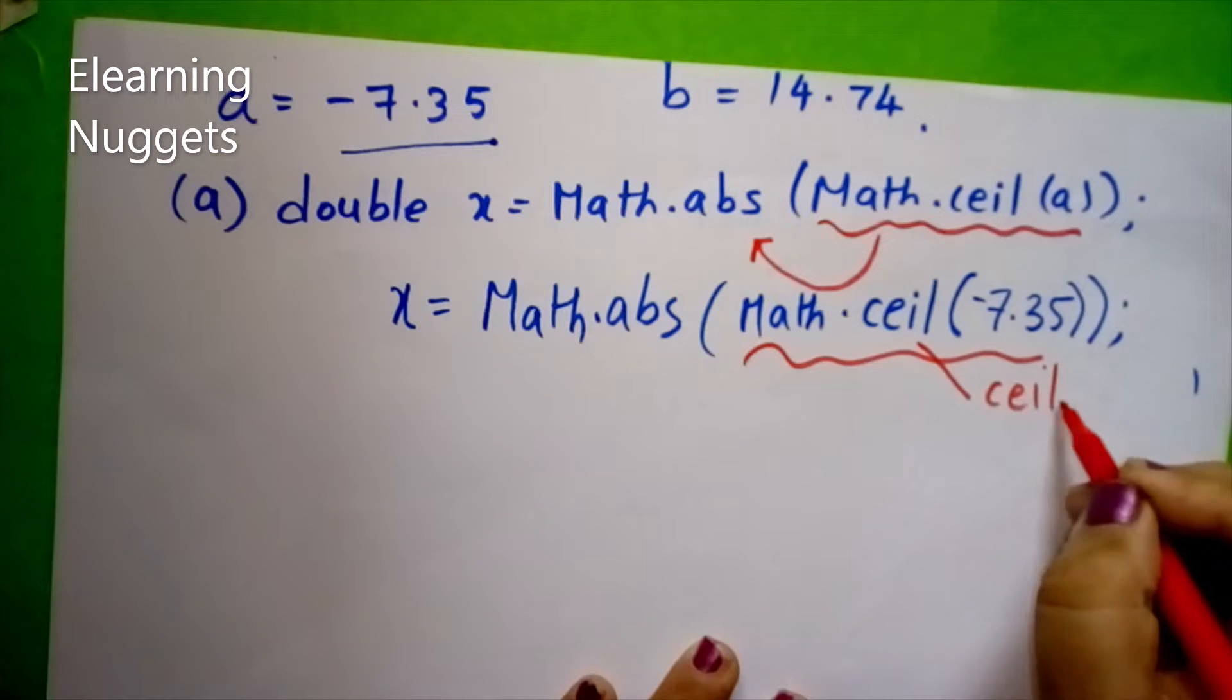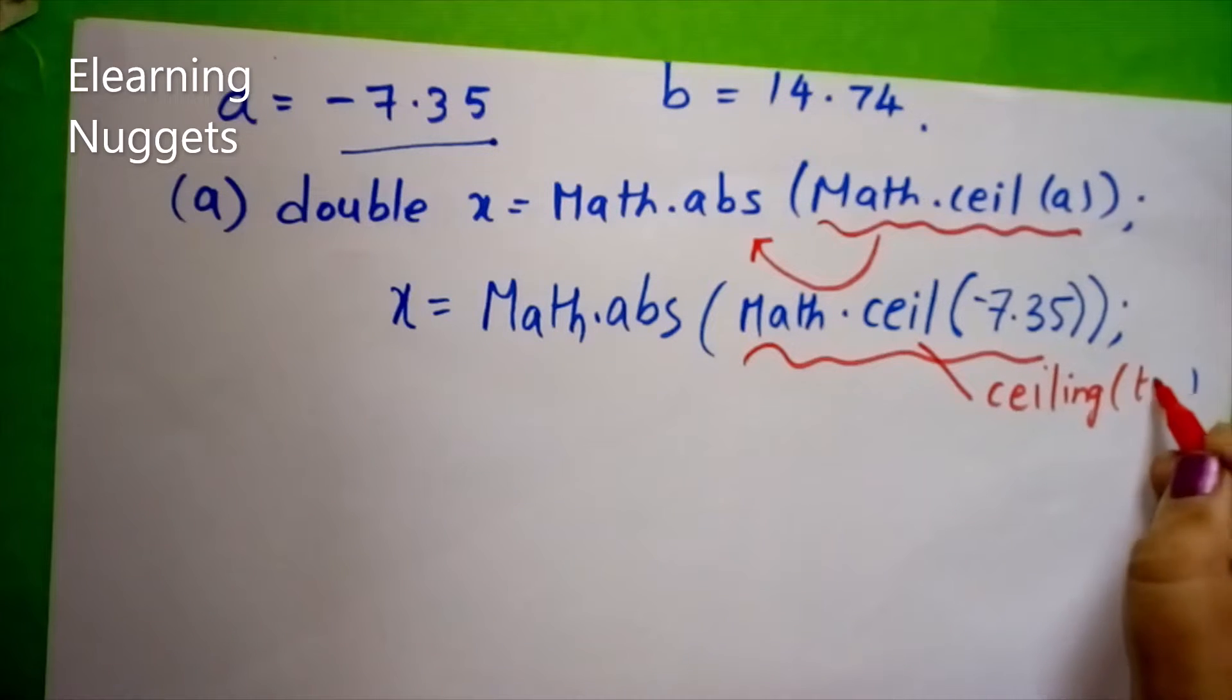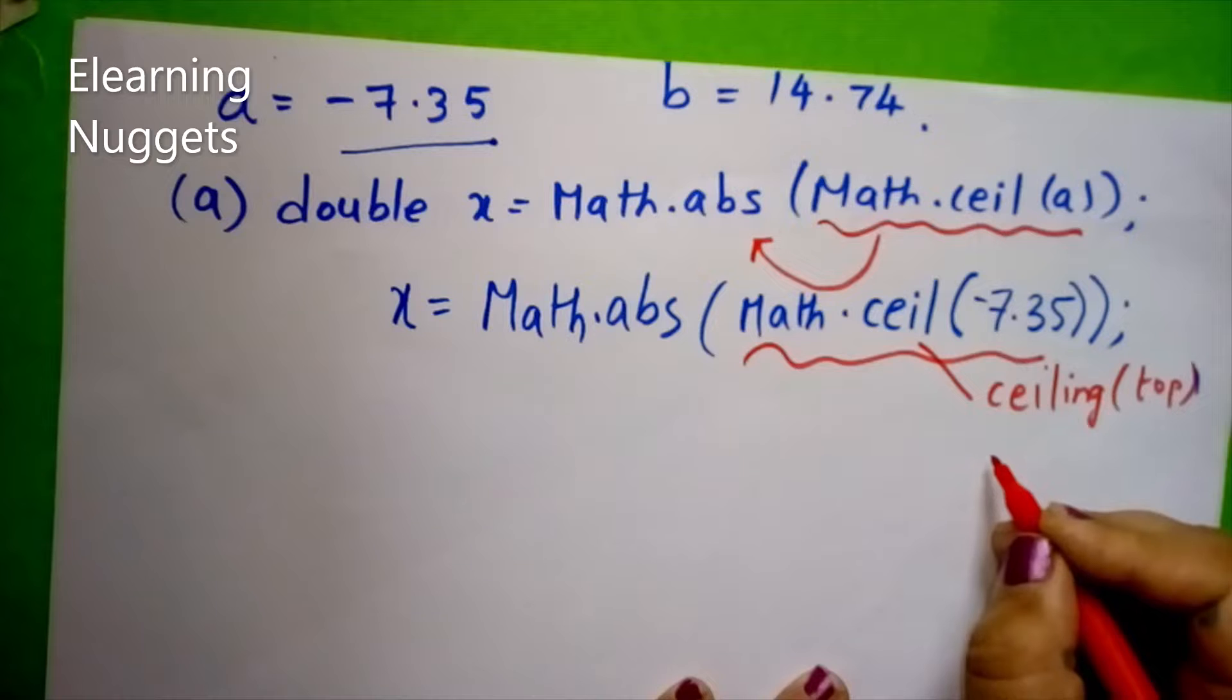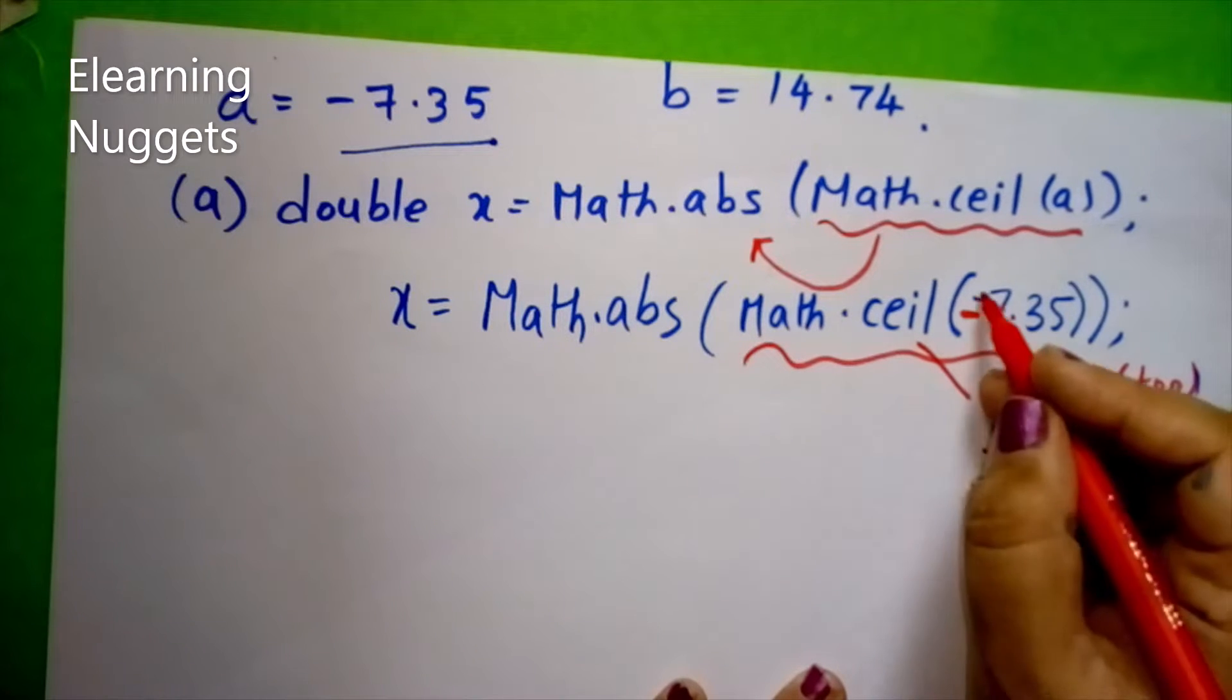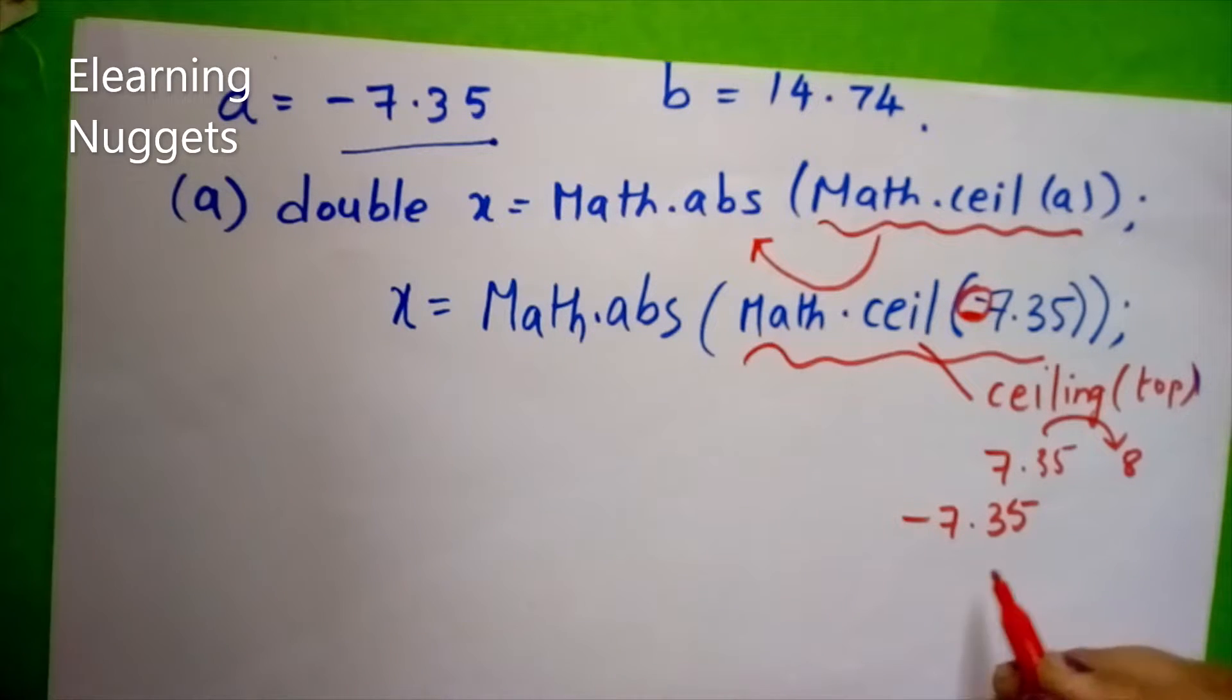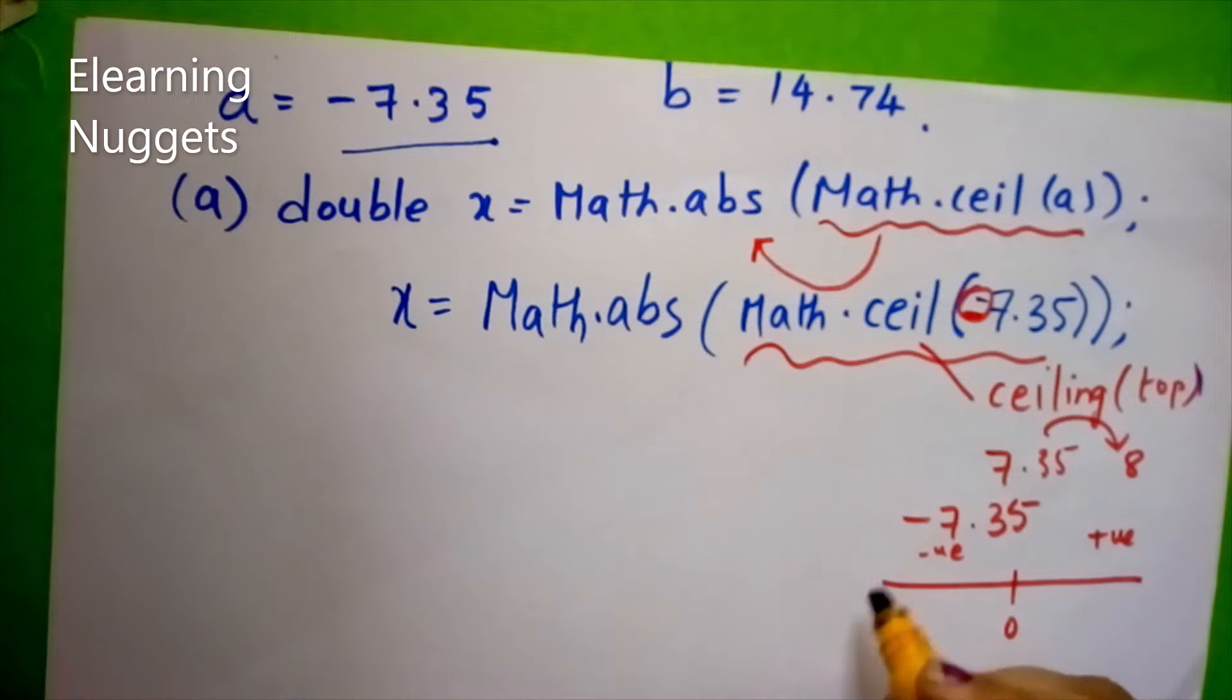I tell my students ceil means the ceiling which we see over the top. Here it is minus 7.35. This ceiling is in the top. That means here it will round off to the highest number. If for example, if I am having this number 7 plus 7.35, the highest number to this would have been 8. But you have to notice here I am having a minus symbol here. It is minus 7.35. You can briefly draw the number line in the side if you want. Zero. This is the positive number. This is the negative number. And where is your minus 7.35? It is between your minus 7 and minus 8. You have this number minus 7.35.